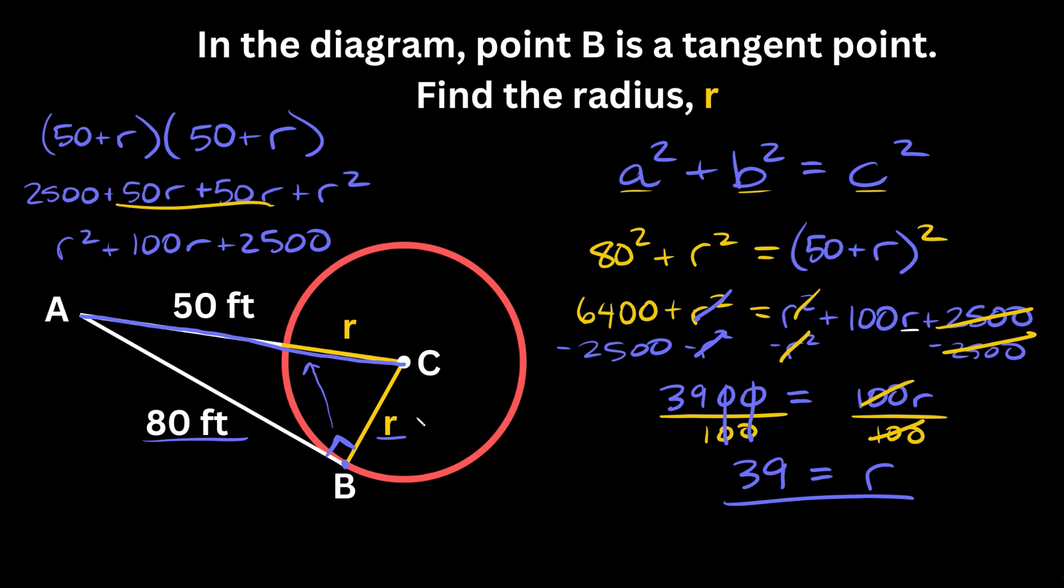We found the radius: R = 39. For clarification, the hypotenuse is 50 + R, or 89. And let's not forget our units—these are all in feet.